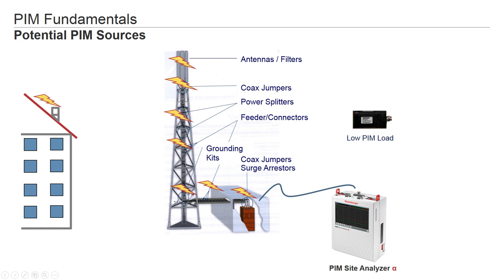PIM can come from any connection point in an RF transmission line. If you have a transmission line with PIM problems, you have to find the problem. The quicker and faster you can solve the problem, the better. With the Rosenberger Site Analyzer PIM Alpha, PIM can be detected on all different positions with a precision of less than 0.3 meter accuracy. Problems can be found very quickly, resulting in short service downtime.